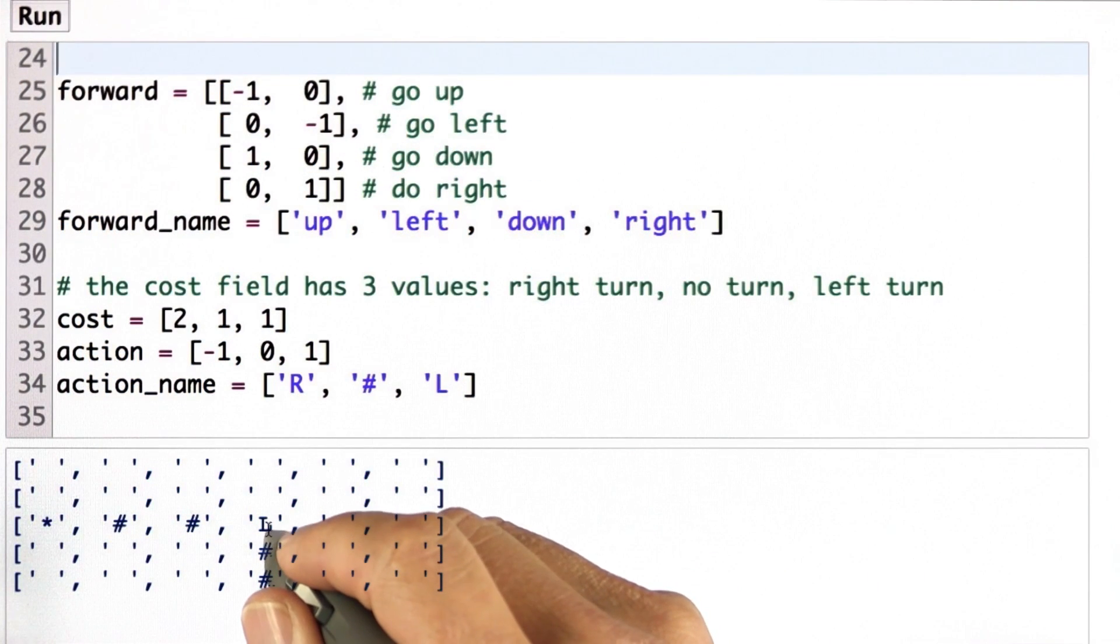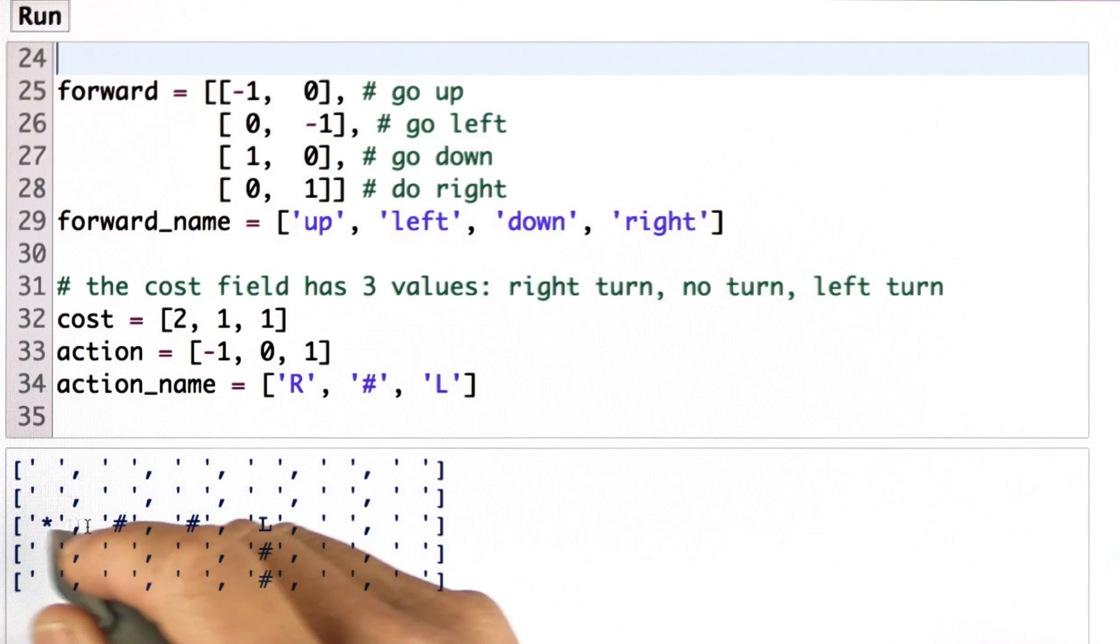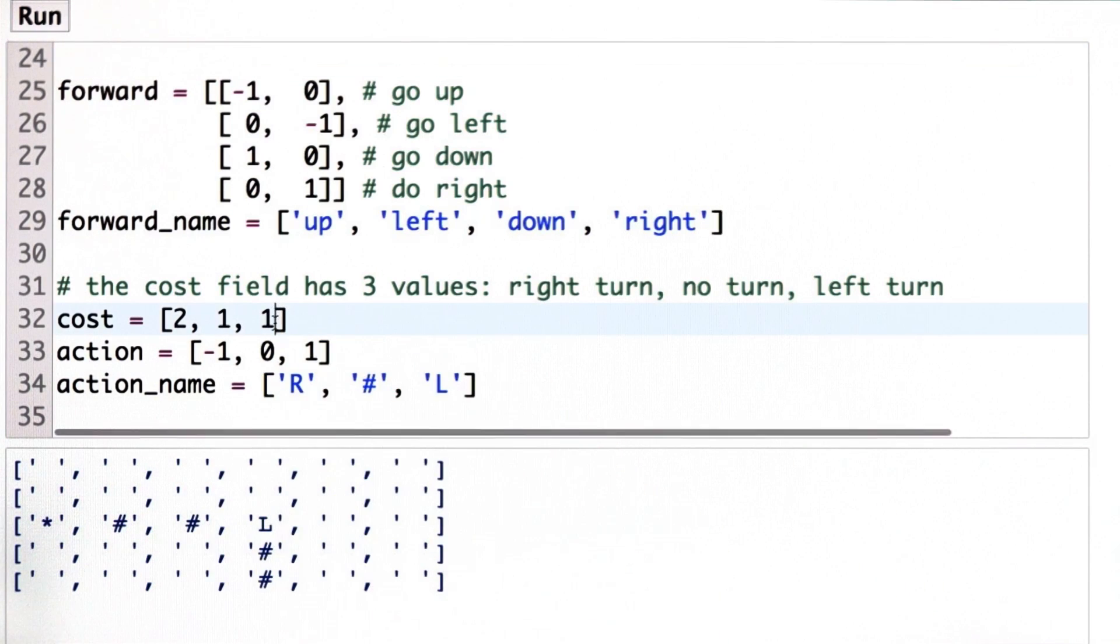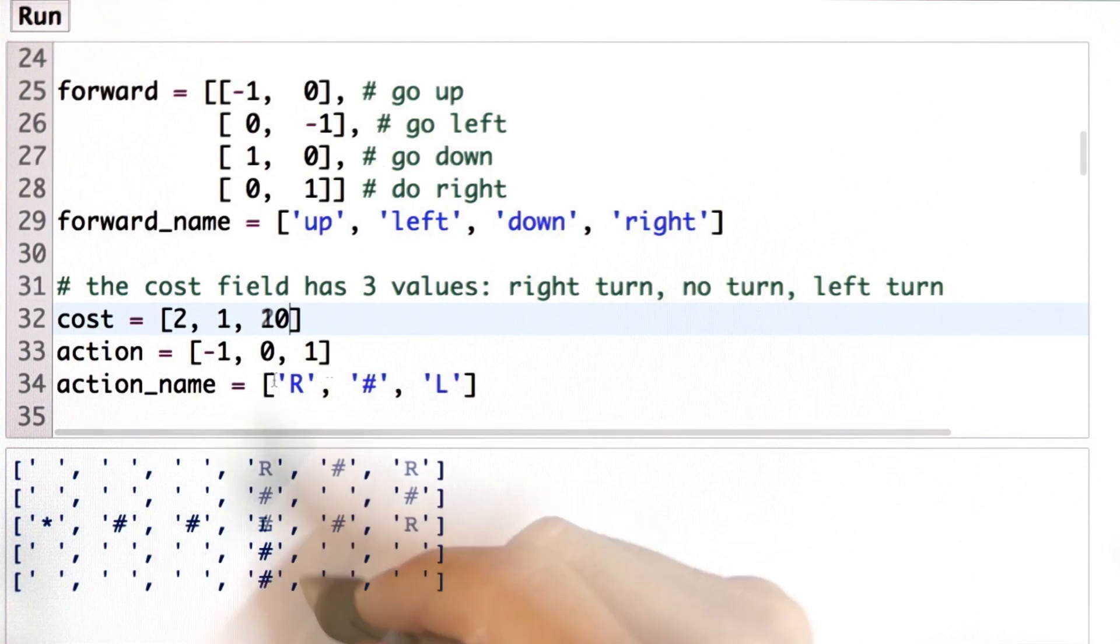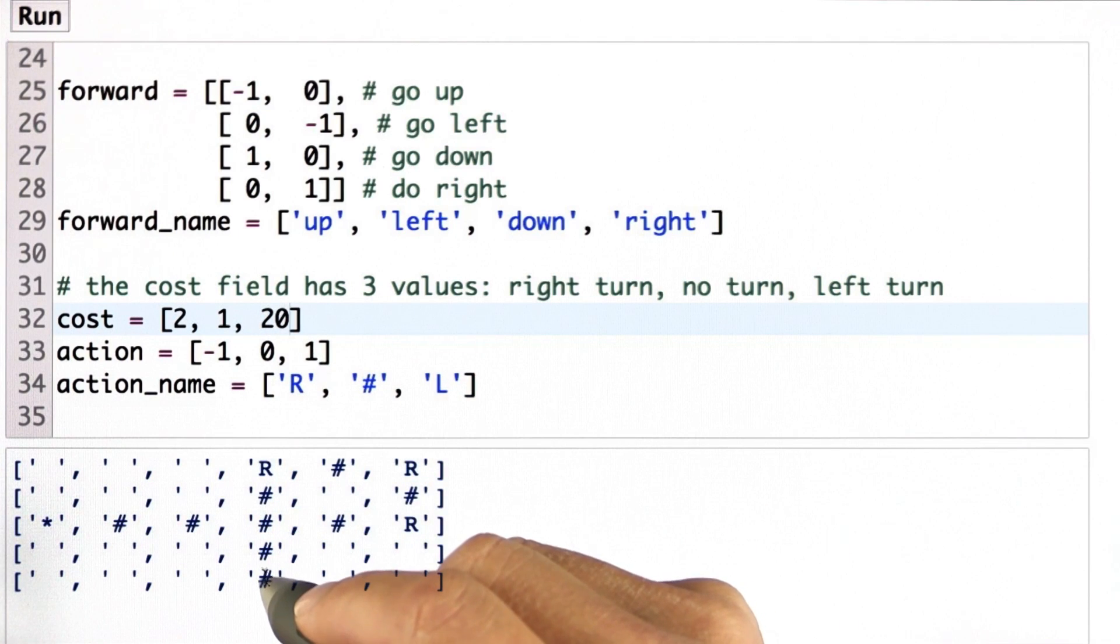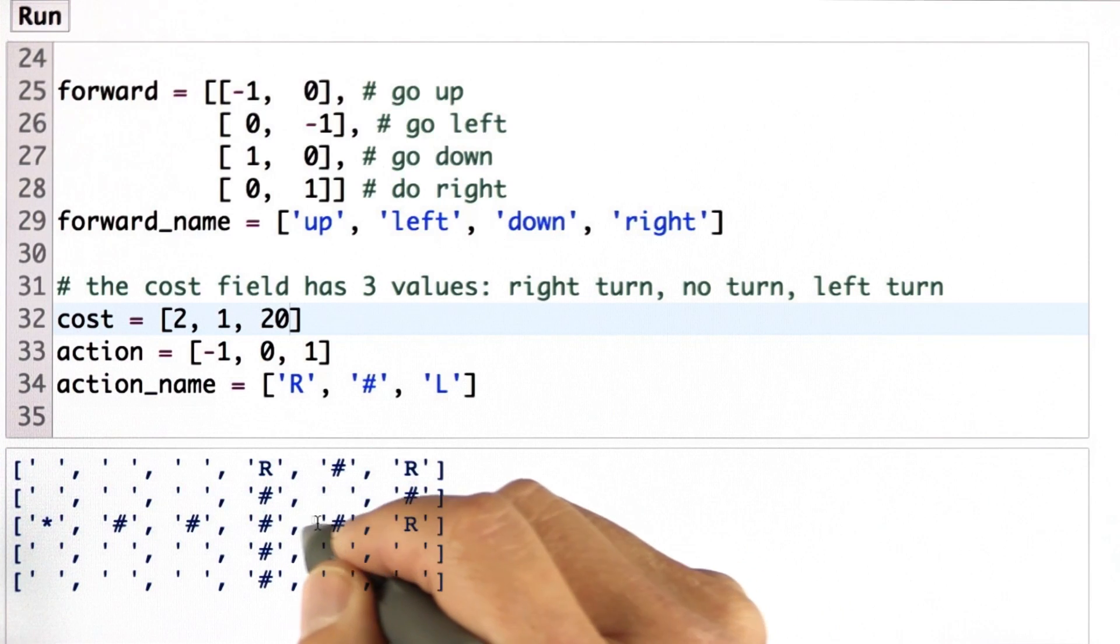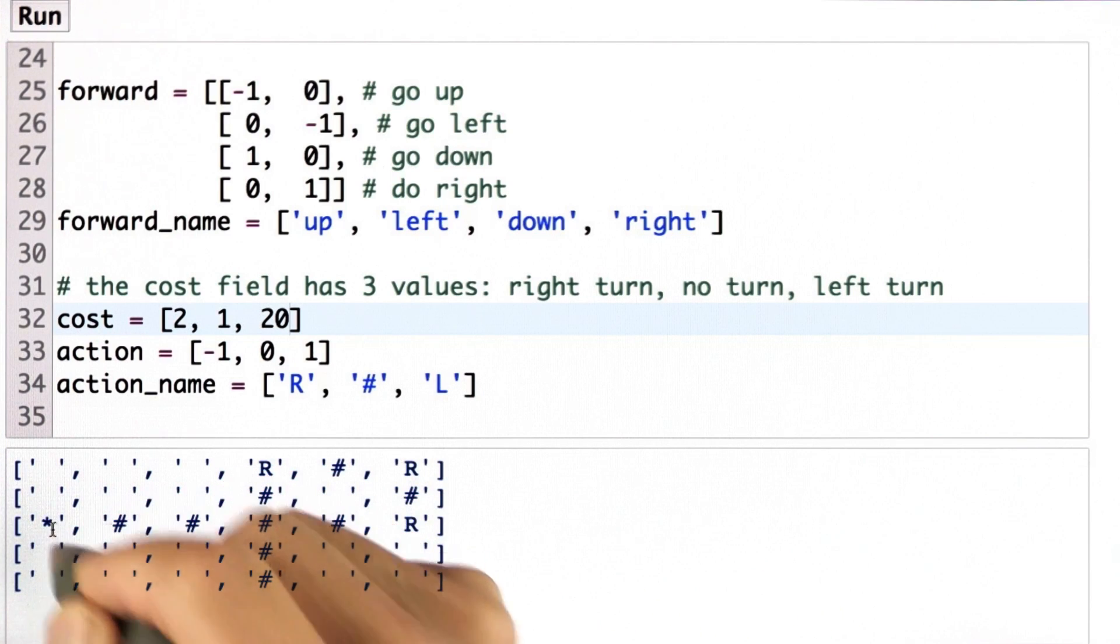And indeed, as I run it, you can see how the car turns left over here to the goal location. If I were to increase the cost for the left action to 20, then my solution changes. You can see the car dashes straight ahead, turns right over here, right over here, right over here, and then goes straight to the goal location.